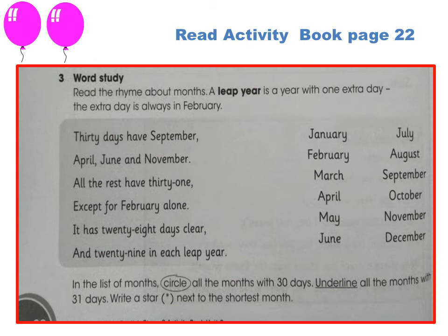Boleh dicek di dalam kalender yang ada di rumah kalian. Kemudian underline all the months with 31 days. Garis bawahi semua bulan yang memiliki jumlah hari 31. Kemudian write a star next to the shortest month. Di sini ada a leap year.